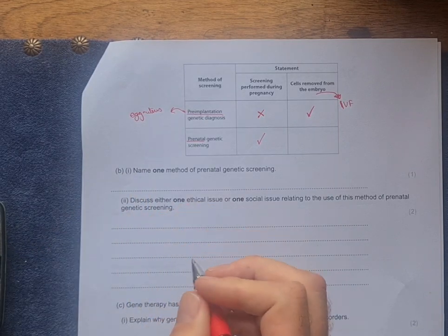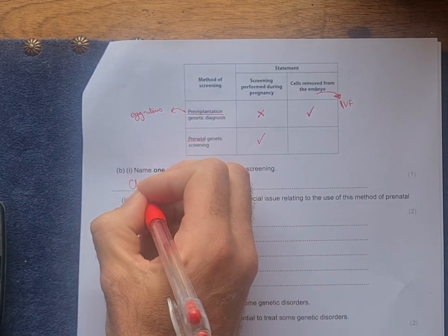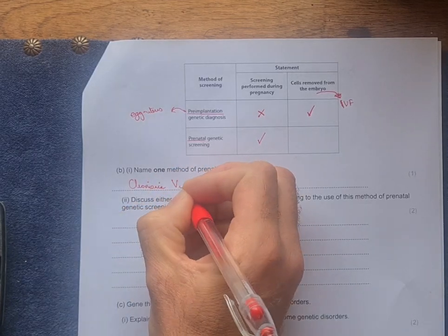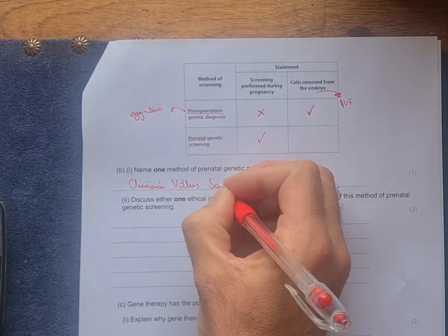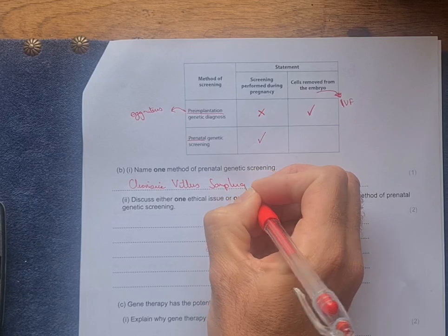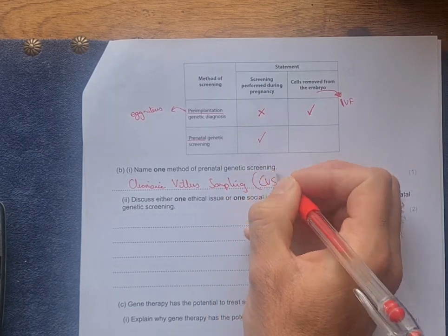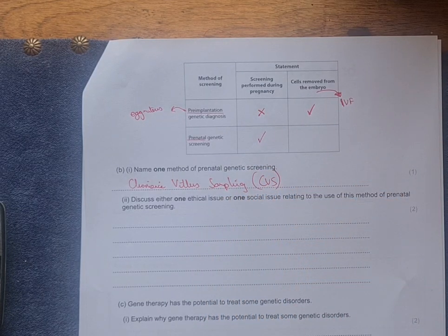So you have chorionic villus sampling, you can put CVS, which is removing cells from the placenta.